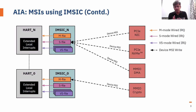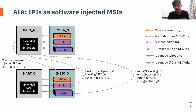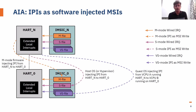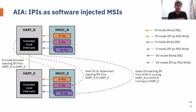Next is how we support IPIs using IMSIC. IPIs are supported as software-injected MSIs, meaning a particular hart can directly write to the IMSIC file of another hart. For example, if M-mode firmware wants to inject an IPI to another hart, it will directly write to the M file of that other hart. The same applies to host OS, hypervisor, and guest operating system. For a guest OS VCPU, it can directly write to the VS file of another hart. Because of supporting IPIs as software-injected MSIs, we naturally support IPI virtualization as well.